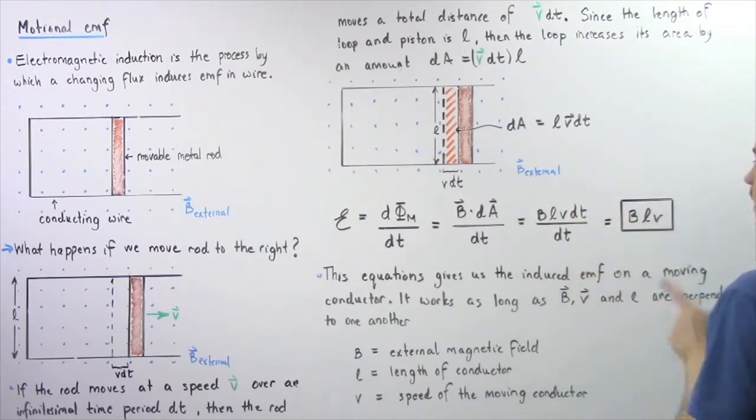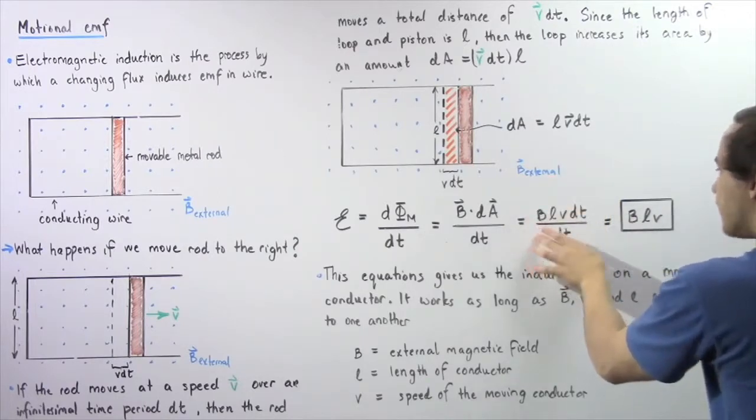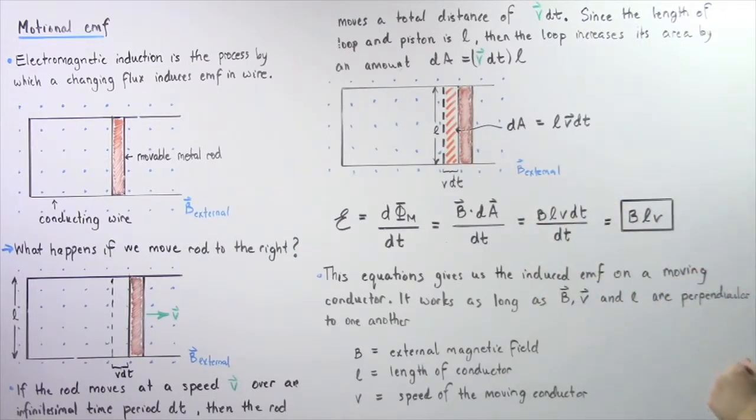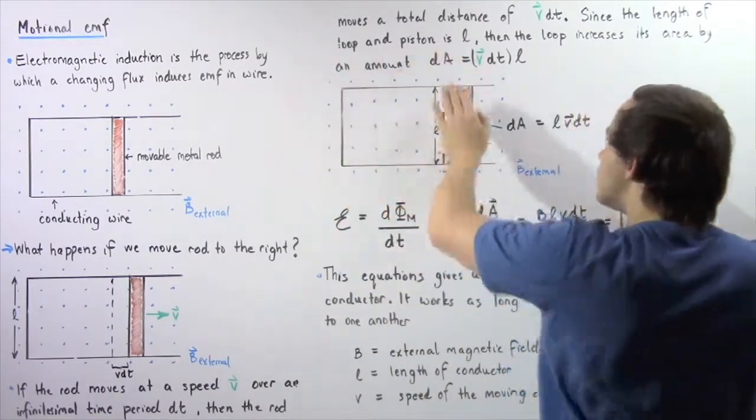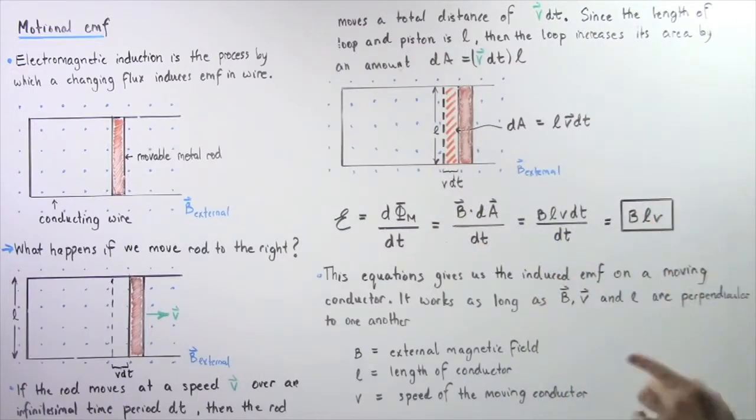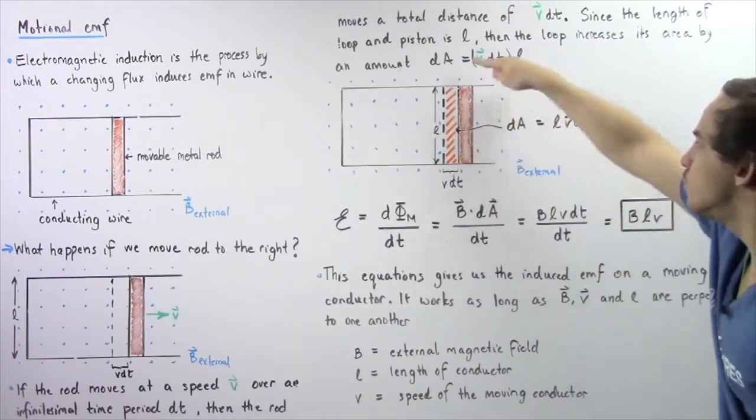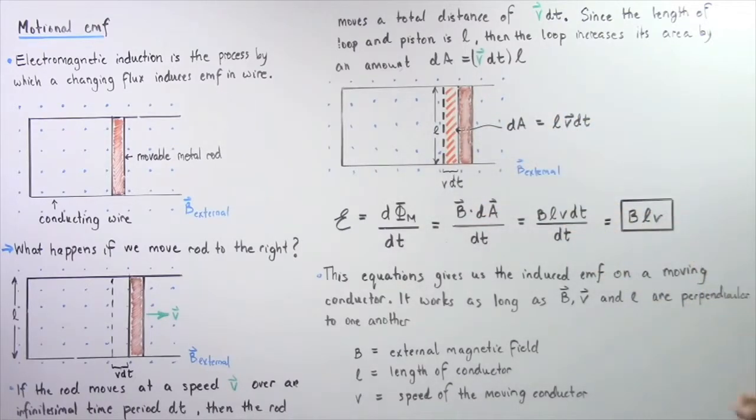Notice we have DT appears on the top and the bottom, so we can cancel those out. We see that our induced EMF that is created inside our loop of conducting wire as a result of our moving conductor is equal to the product of the magnetic field B, the length of our movable metal section given by L, multiplied by V, the speed of our movable conducting section.